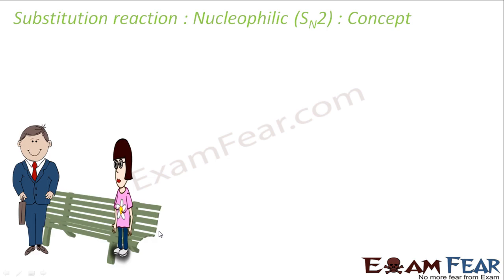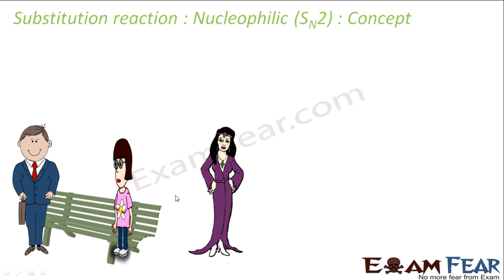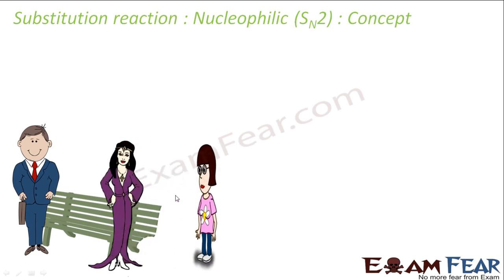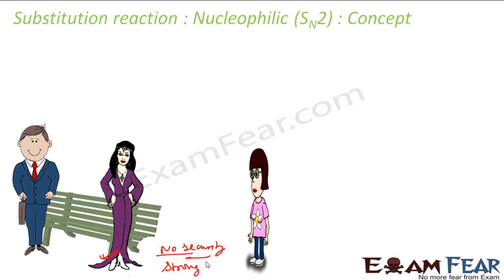Let's see the concept of the SN2 reaction. There is a compound with a leaving group and there is a very strong nucleophile. This nucleophile can influence this atom to move. In this case, there is no steric hindrance — no security guard — so the strong nucleophile is able to influence the atom and cause the leaving group to move.